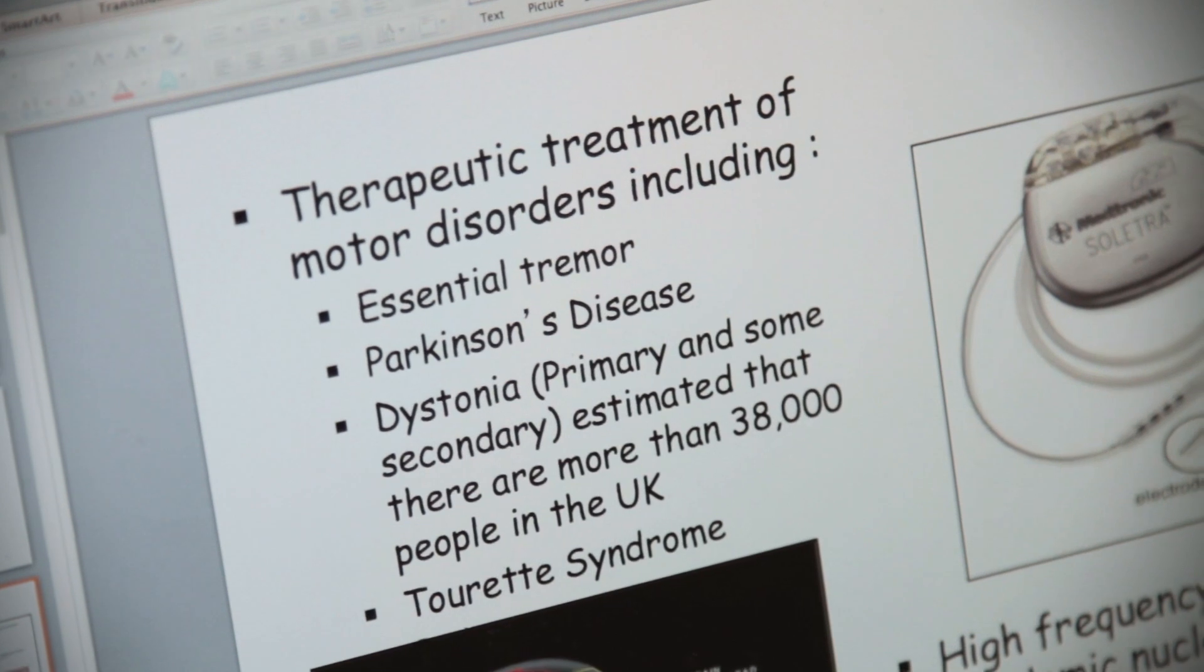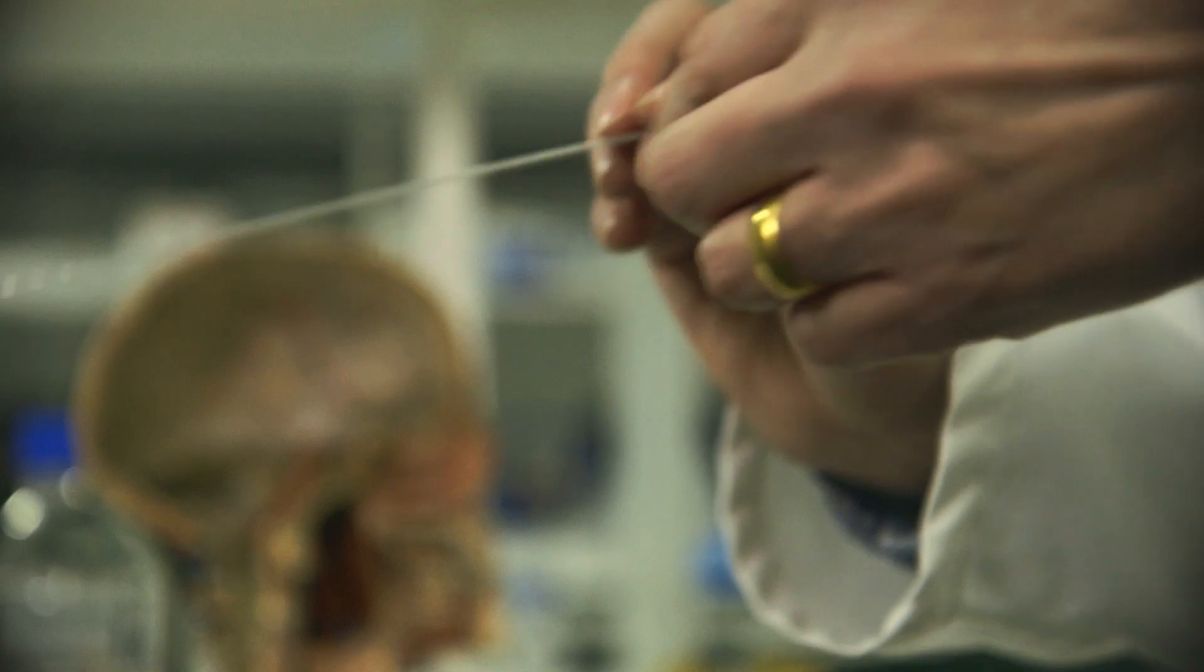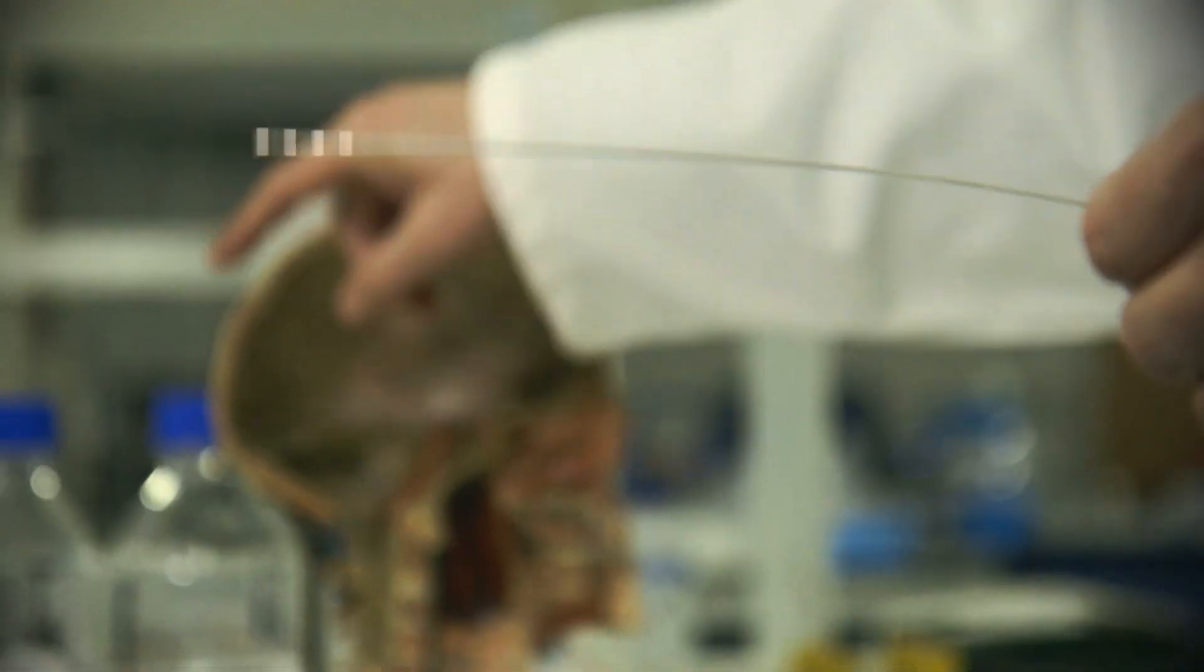and that reduces things like tremor for Parkinson's, dystonia, essential tremor. Once the device is put in, it will actually allow that to be minimized to virtually no tremor at all and allow them to function as a normal person in society.